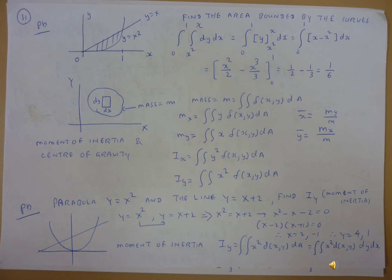In place of y we substitute x squared. So x squared equals x plus 2, therefore x squared minus x minus 2 equals 0. Factoring gives (x minus 2)(x plus 1) equals 0, so x equals 2 and x equals negative 1. Substituting back, y equals 4 and y equals 1. The moment of inertia Iy equals double integration of x squared dy dx.